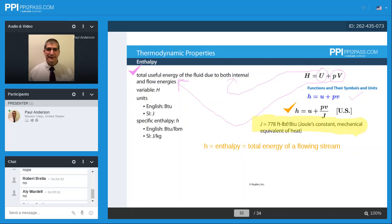J is 778 feet foot pound force per BTU. Joel's constant mechanical equivalent of heat. So that is available in the NCEES handbook.